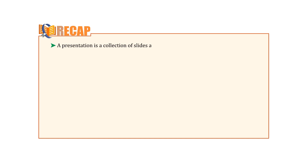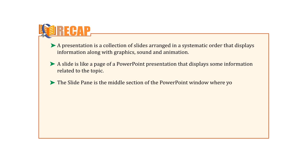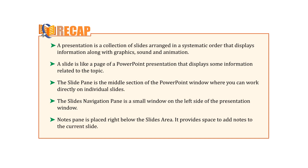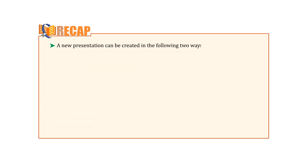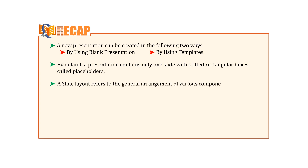Let us take a recap of this chapter. A presentation is a collection of slides arranged in a systematic order that displays information along with graphics, sound and animation. A slide is like a page of a PowerPoint presentation that displays some information related to the topic. The slide pane is the middle section of the PowerPoint window where you can work directly on the individual slides. The slide navigation pane is a small window on the left side of the presentation window. Notes pane is placed right below the slides area and provides space to add notes to the current slide. A new presentation can be created by using blank presentation or by using templates. By default, a presentation contains only one slide with dotted rectangular boxes called placeholders. A slide layout refers to the general arrangement of various components on the slide.